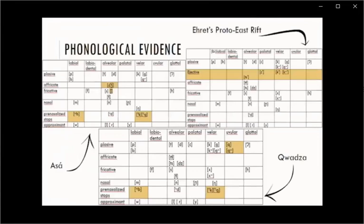Let's start with the phonological evidence. These are the consonant inventories of Asa and Kwadza, and a proposed consonant inventory of Proto-East Rift by Christopher Erit. A few things stand out. Erit reconstructs ejective plosives in Proto-East Rift, but I could not find these in any of the data, so I don't know what they are based on. And in Kwadza there are uvular stops, which were not reconstructed by Erit and are also not present in Asa.